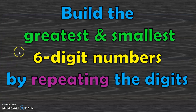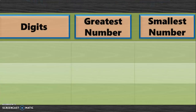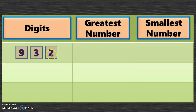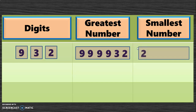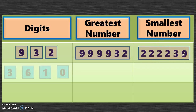Now let us do exercises for building the greatest and smallest 6-digit numbers by repeating the digits. In the first question, with 3 digits needing a 6-digit number, we need 3 more digits. Repeat the biggest digit 9 three times and arrange remaining digits from big to small, giving 9,99,932. For the smallest, repeat the smallest digit 2 three more times and arrange remaining digits from small to big, giving 2,22,239.